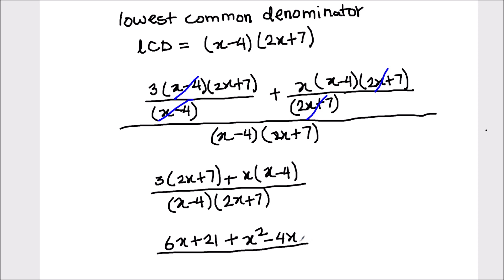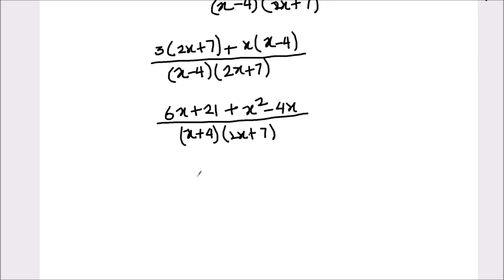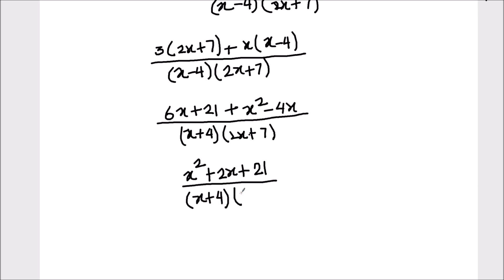We write the term with the highest power first. So the numerator becomes x squared, then 6x minus 4x equals 2x, plus 21. The final simplified expression is x squared plus 2x plus 21, divided by x minus 4 times 2x plus 7.